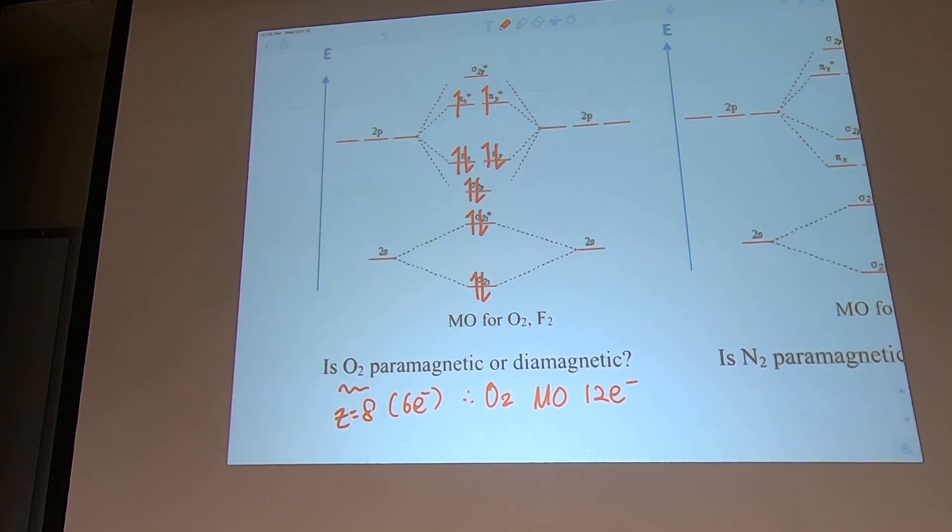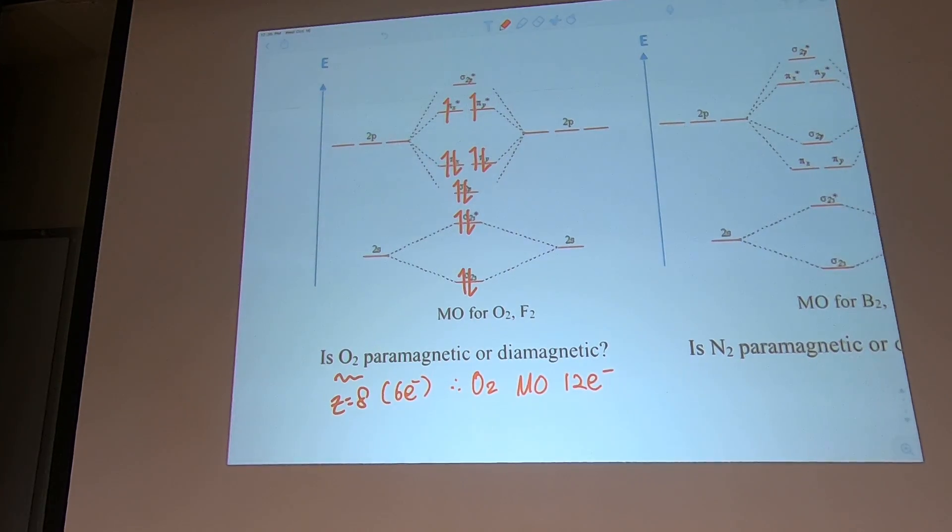What you see is in the anti-bonding there are two unpaired electrons located there. That gives us some interesting property. Does O2 exist as paramagnetic or diamagnetic? The answer is oxygen is known as paramagnetic, and I will show you a video. The paramagnetism is responsible by these unpaired electrons.